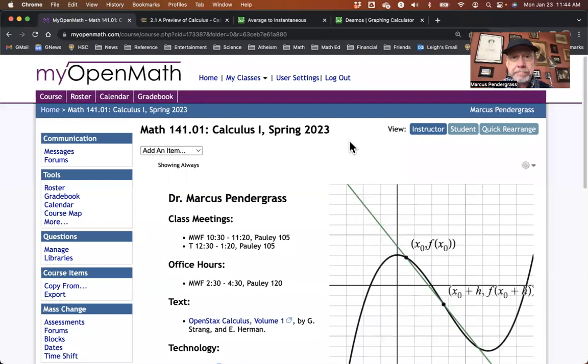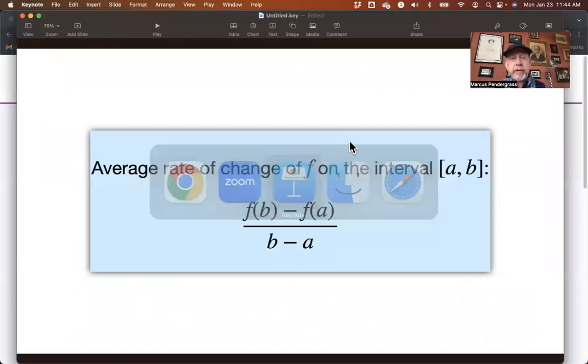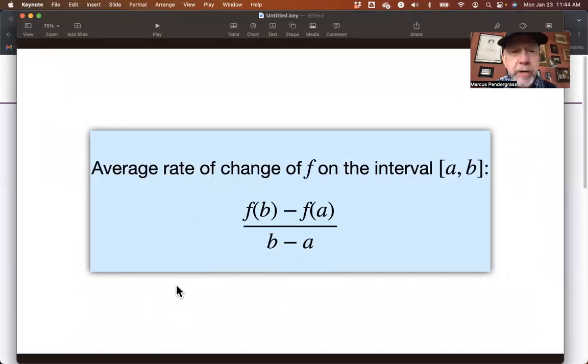The basic formula that we're dealing with here is the one for average rates of change. So the average rate of change of some function f on an interval from a to b is given by this expression, which is called the difference quotient. So in any given situation, finding an average rate of change means finding out what your function f is, what interval you're interested in, and then computing this quantity, which would be the average rate of change of your function on that interval.